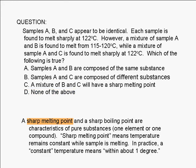A sharp melting point and a sharp boiling point are characteristics of pure substances, one element or one compound. When we say that a substance has a sharp melting point, we mean that the sample's temperature remains constant while it's melting. In practice, a constant temperature means within about one degree.